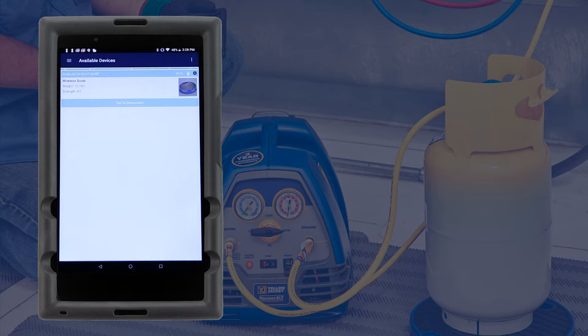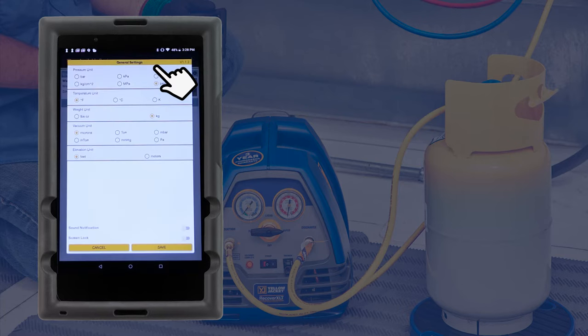To select the units of measure, tap on the three dot icon in the top right corner of the screen and select general settings. Here you can select the scale units to be pounds and ounces or kilograms.